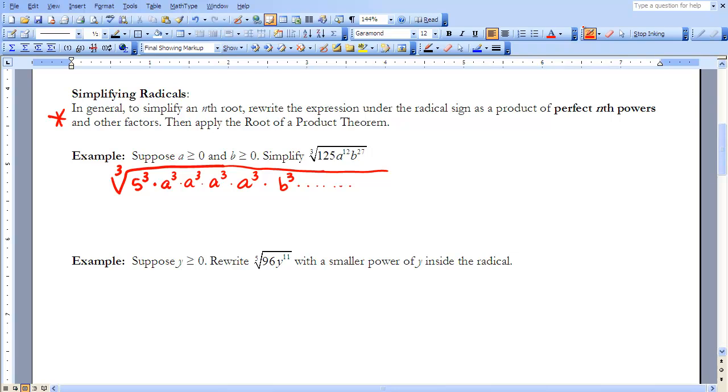To make things shorter, we look at this: the third root of 125 is 5. As we look at a to the 12th, there are 4 a to the thirds in that, so I'm going to pull out 4 a's. We know there are 9 b to the thirds under the radical, so I can pull out b to the 9th.